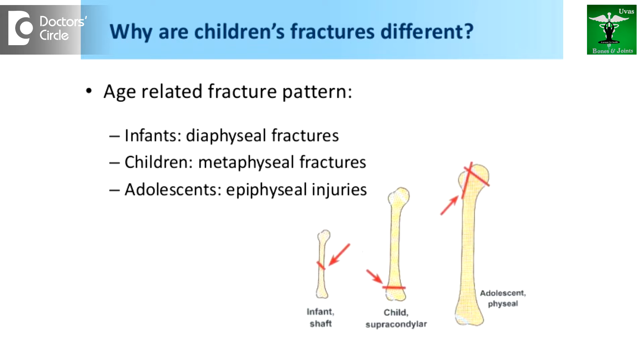The periosteum, which is a very thick covering of the bone in children, prevents fractures by giving extra stability. The bones are also rich in fibrous tissue, giving them extra plasticity so they can take the load of any fall or injury by bending.